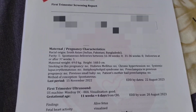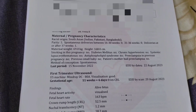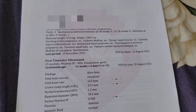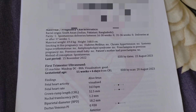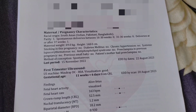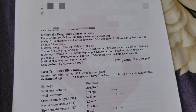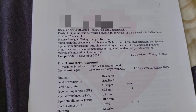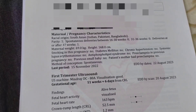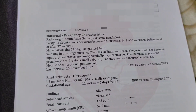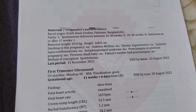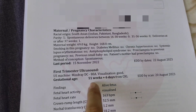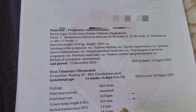Next is the NT scan report. This is a complete NT scan report. This is the EDD — the estimated date of delivery. This is dated at 10 to 11 weeks. The heartbeat here is 163 bpm.